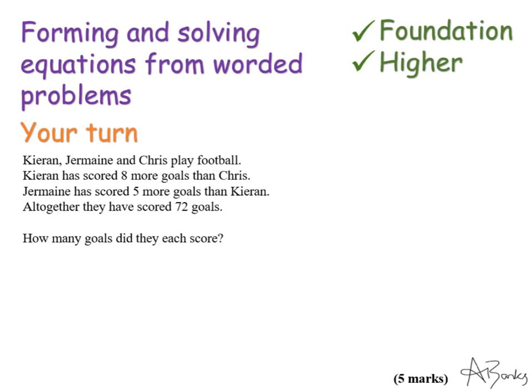Because, again, it's saying Kieran has scored eight more than Chris. Jermaine has scored five more than Kieran. And all together they've scored 72 goals. So it's quite easy to spot that this is the question we're looking at. This is the process we're looking at. So you can pause the video and have a go at this question. And then unpause when you're ready to see the solution.